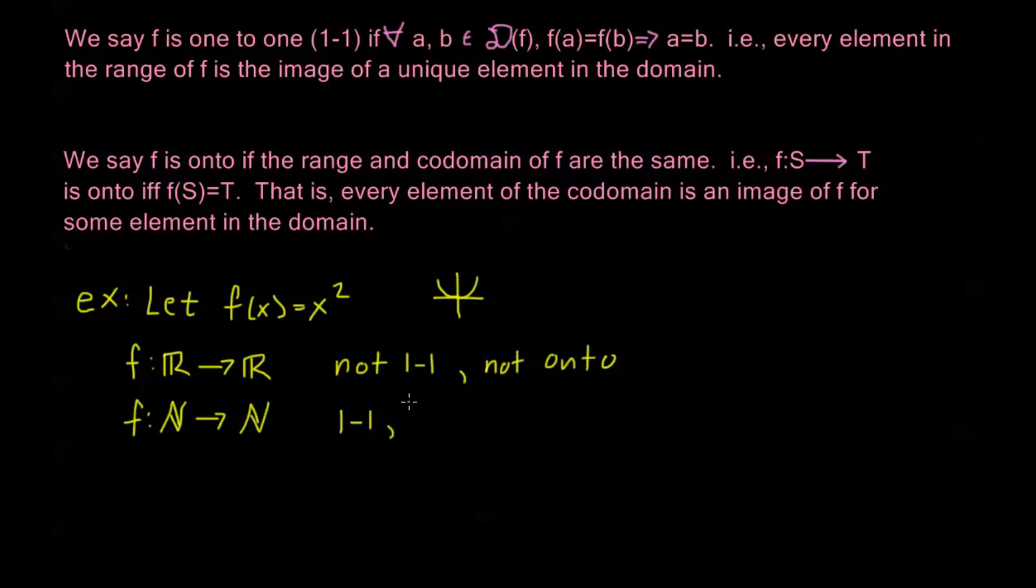Now what about onto? Onto means that x-squared, or all the possible values that x-squared can be for natural numbers, is going to be all natural numbers. But it's clearly not onto, because for example, 5 is a natural number, but 5 does not equal any other natural number squared. So this is going to be not onto again.